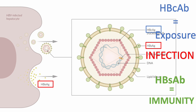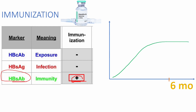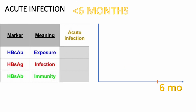The e antigen indicates viral replication. Now for the immunization scenario: the only thing found in someone who has been immunized but never infected is the surface antibody — it indicates immunity from exposure to the surface antigen in the vaccine as a subunit. There is no surface antigen because the person is not infected, and no core antibody because they've never been exposed to the actual virus.